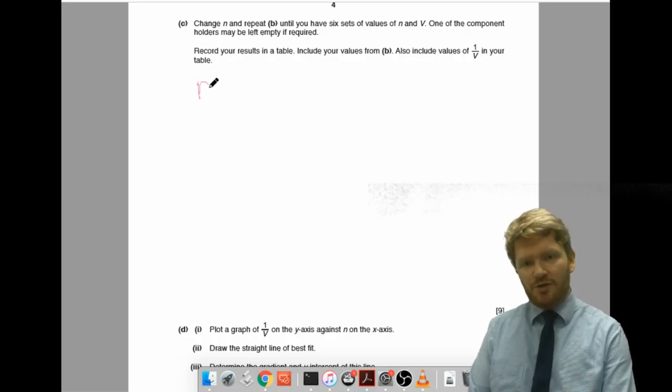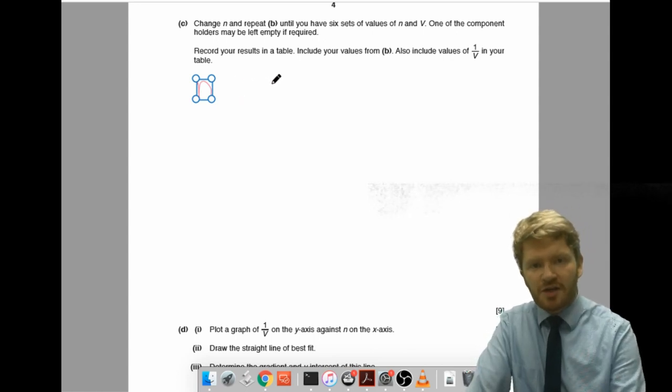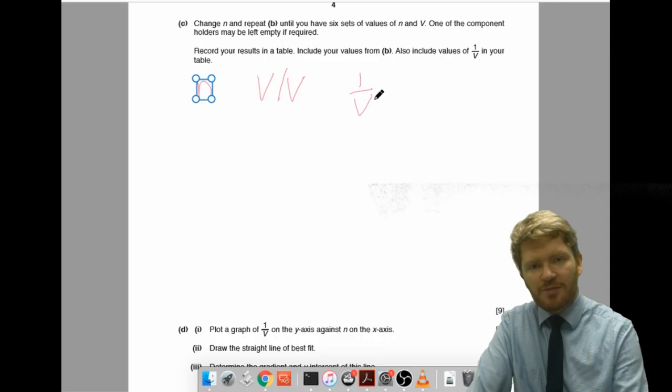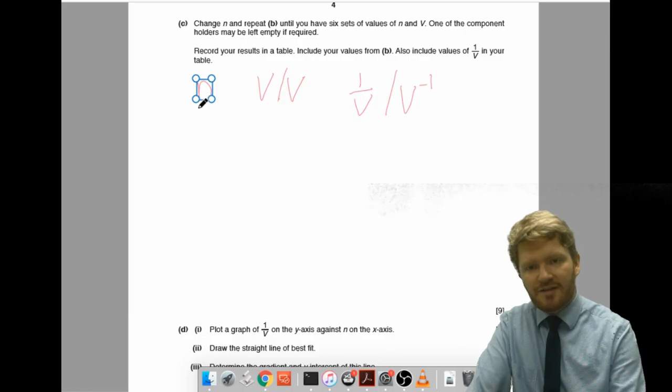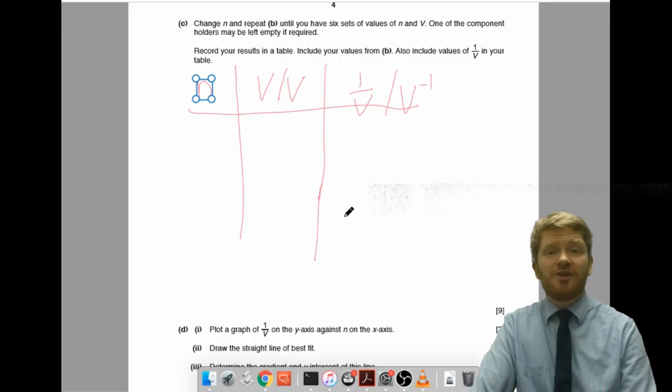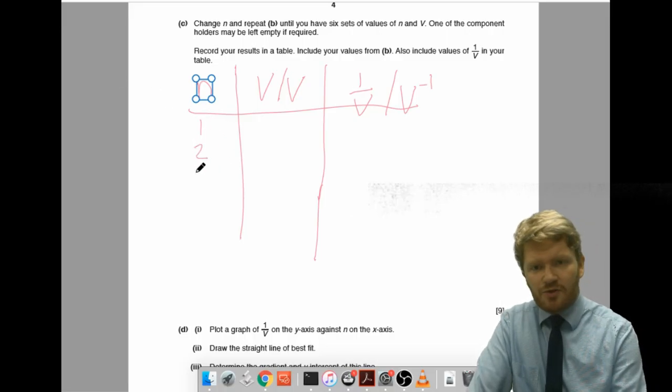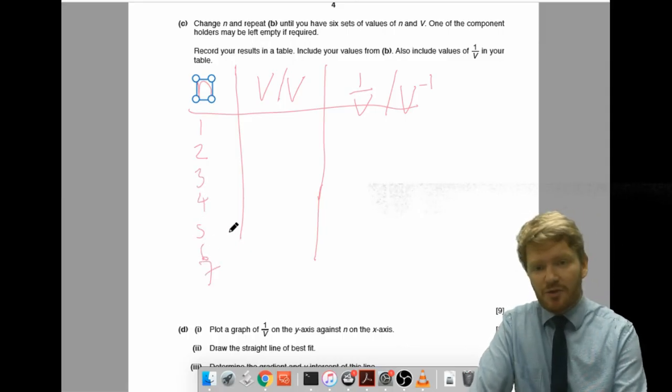So, pretty easy table to have. So, I want my number of components N. And I want to record V. Really important to record this with a unit. So, V will be in volts. And I'm asked for 1 divided by the volts here. And the unit for that will be volts to the power of negative 1. So, you're going to do this with a ruler in the real thing. But rulers don't work particularly well on graphics tablets. So, I'm just going to do it this way. And I'm going to do 1, 2, 3, 4, 5, 6. And just for fun, because I've got enough to do it, I'm going to do 7.